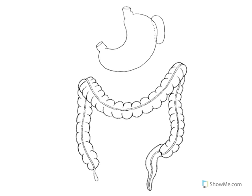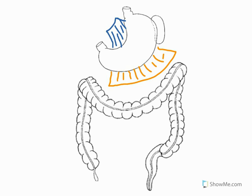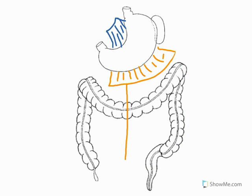In blue I'm going to draw the lesser omentum on top of the stomach and the sheet of mesentery that you would find going up to the liver from there. Now the greater omentum will continue over and drape over the large intestine — it's a very large mesentery — but we're going to cut it off and leave it here for simplicity's sake.